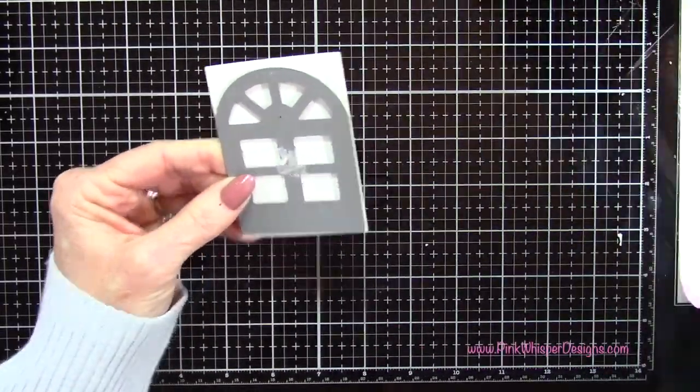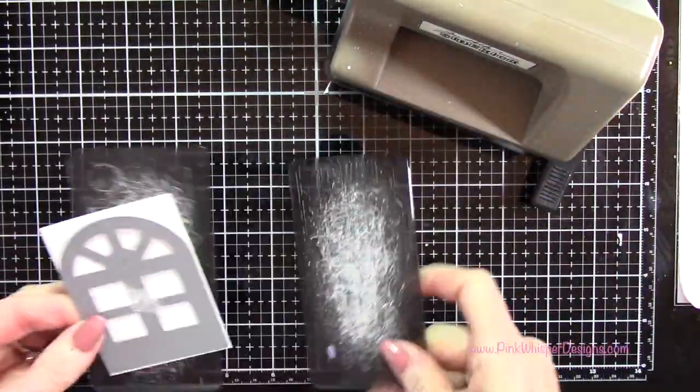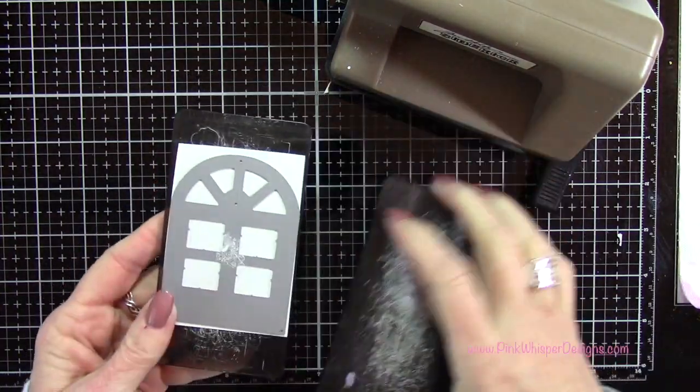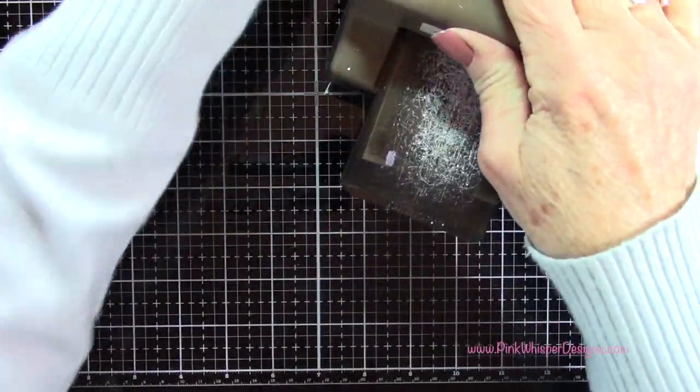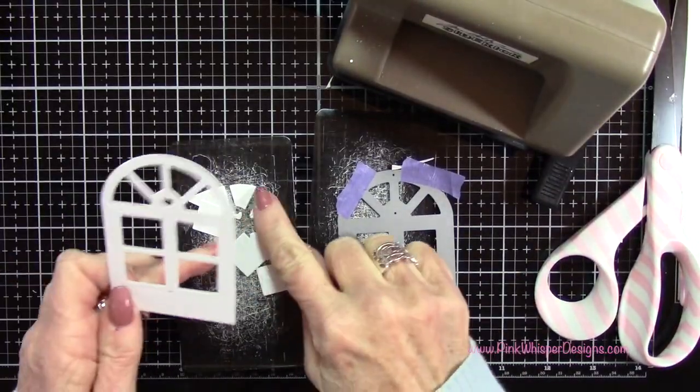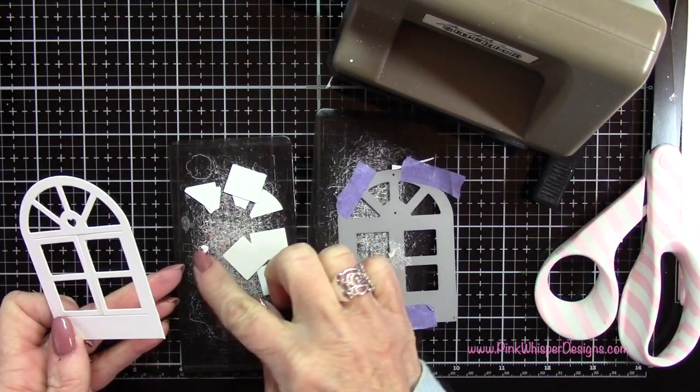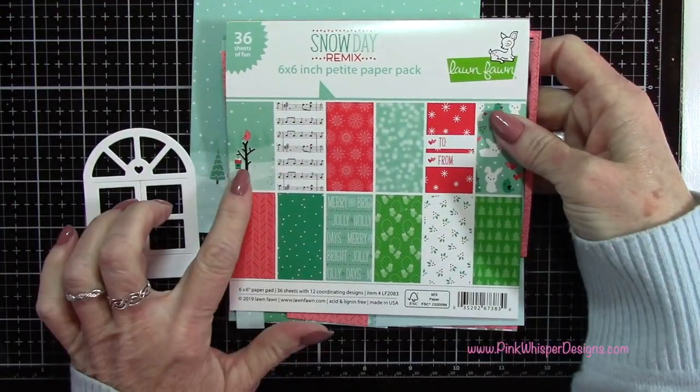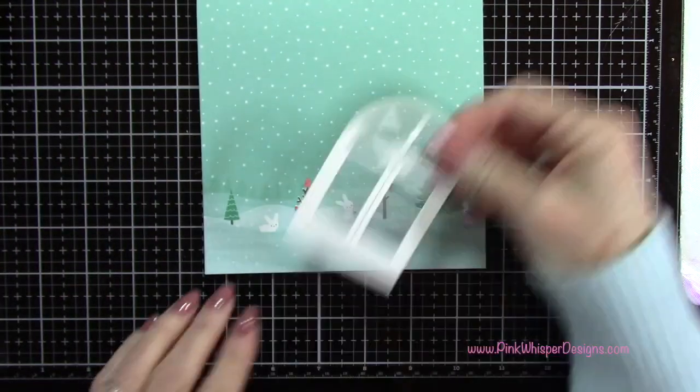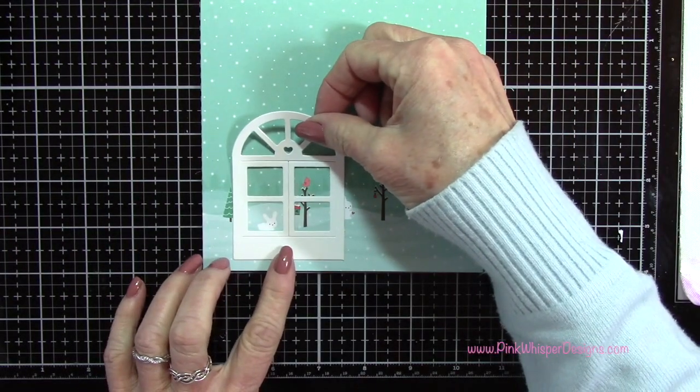Now I want to place a window right up there above the flooring. This is from the Wonderful Window Die Set. I'm going to place it on some Bristol Smooth paper and run it through my Sizzix Sidekick machine. I am going to keep that little tiny heart there because I'm going to be putting that back in when we're done.